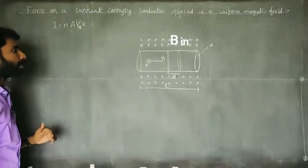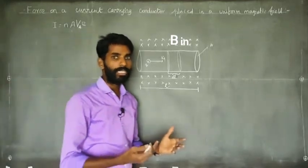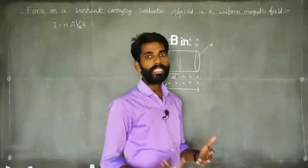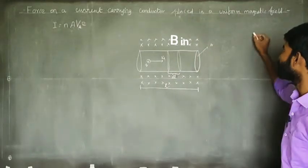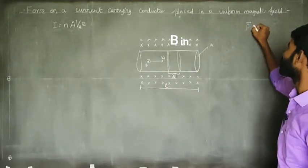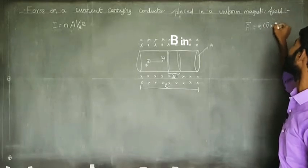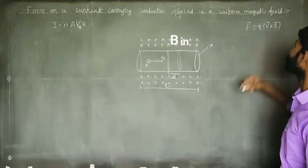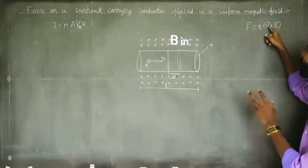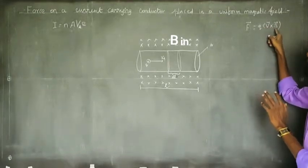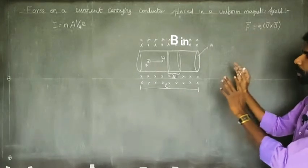Now let's talk about moving charged particles in a magnetic field. They experience a force. The force on a moving charge in a magnetic field is given by: F vector is equal to Q into V vector cross B vector. Here Q is the charge of the particle, V is the velocity, and B is the magnetic field.